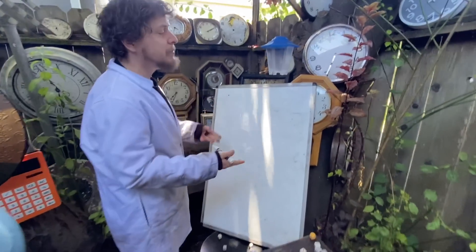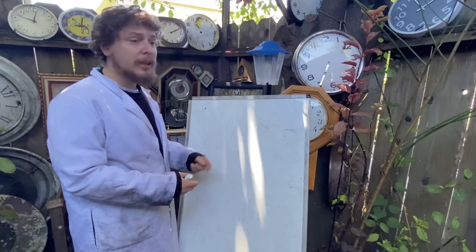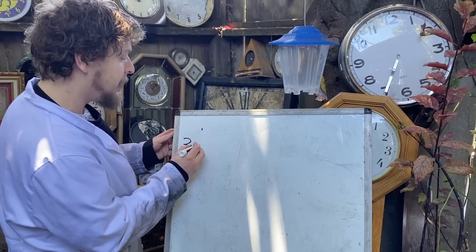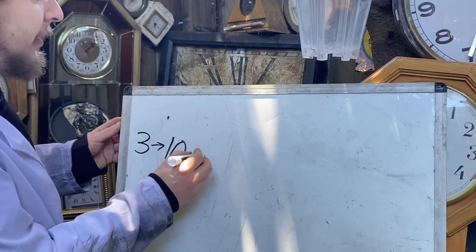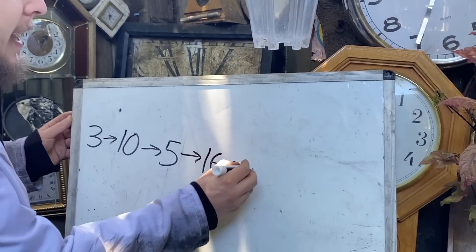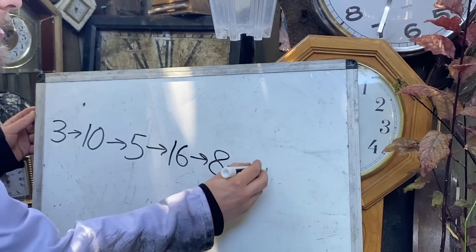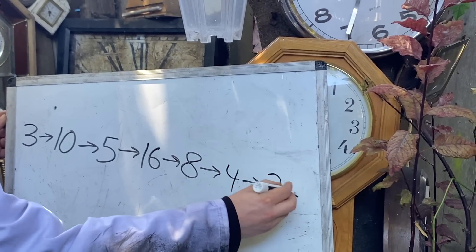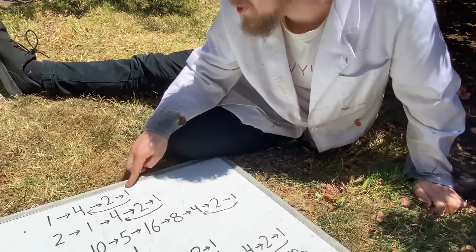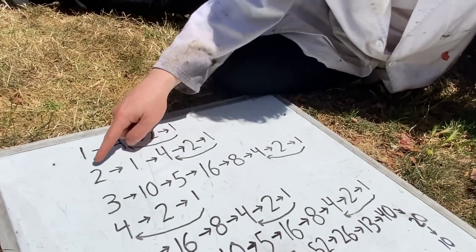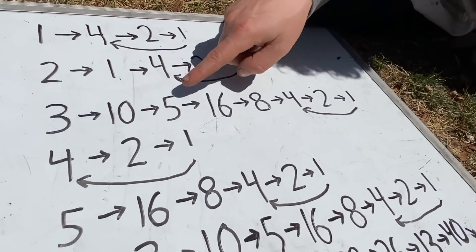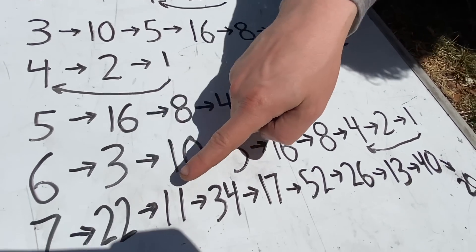You're going to want to write them down. Typically in base 10, a starting number like 3 leads to 10, to 5, to 16, to 8, to 4, 2, 1, and a loop. Here are the chains the first few numbers would lead to under this process — all of them end up at the 4, 2, 1 cycle, some taking longer than others.